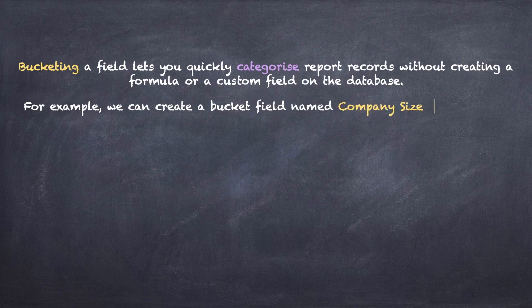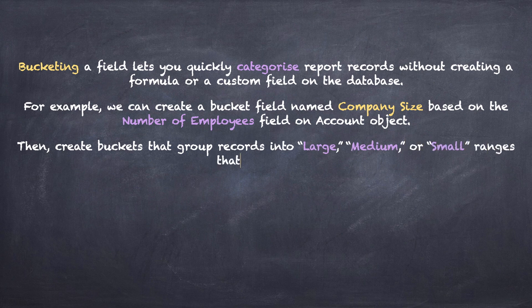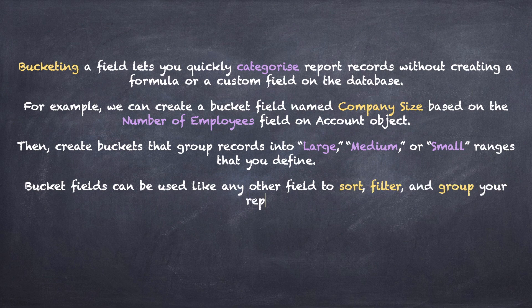Then create buckets that group records into large, medium or small. Bucket fields can be used like any other field. We can use it to sort, filter and group our report. You can add up to 5 bucket fields per report and each with up to 20 buckets.